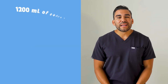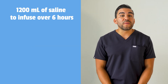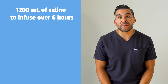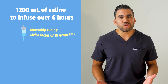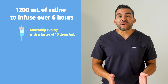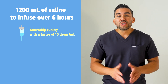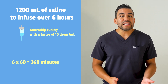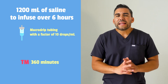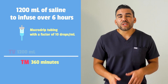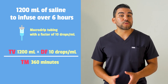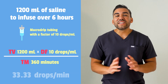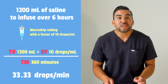Now let's work through an example. The doctor orders 1200 mLs of saline to infuse over 6 hours, and you're using macro drip tubing with a factor of 10 drops per mL. First, convert 6 hours into minutes: 6 times 60 equals 360 minutes. Now plug it into the formula: 1200 mLs times 10 drops per mL, divided by 360 minutes, equals 33.33 drops per minute.